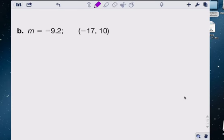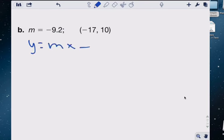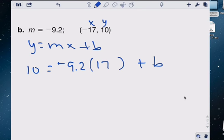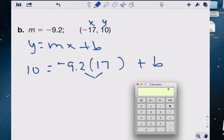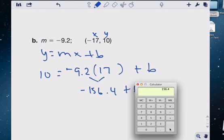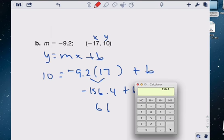Last one. Oh, my goodness. Y equals Mx plus B. Remember? Y, X, here's Y. Okay. Y is 10 equals negative 9.2 times 17 plus B. Well, let's multiply these two first. Okay. When you multiply them, 9.2 times 17 is a negative 156.4 plus B.